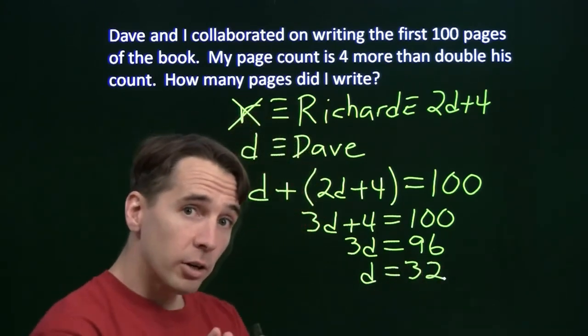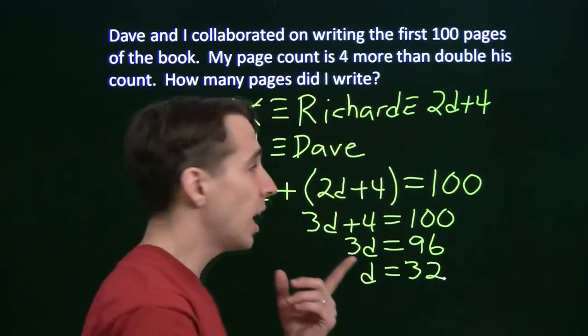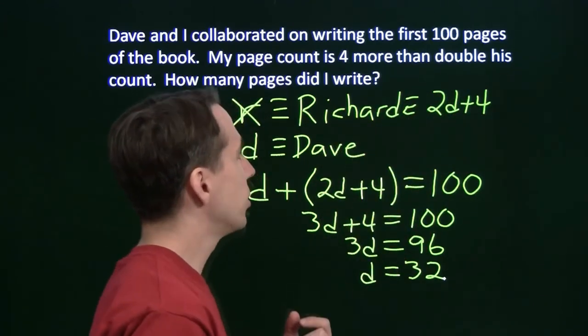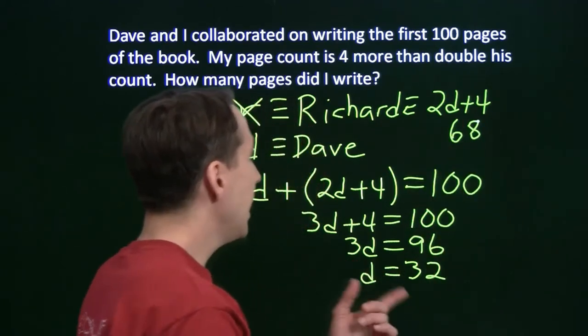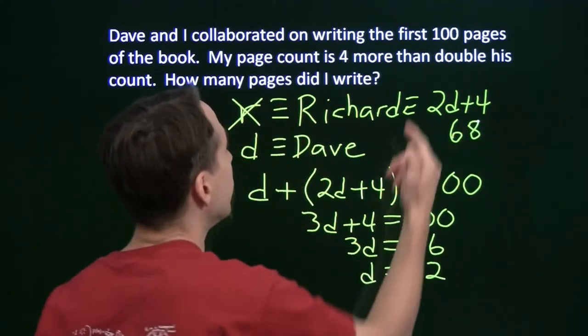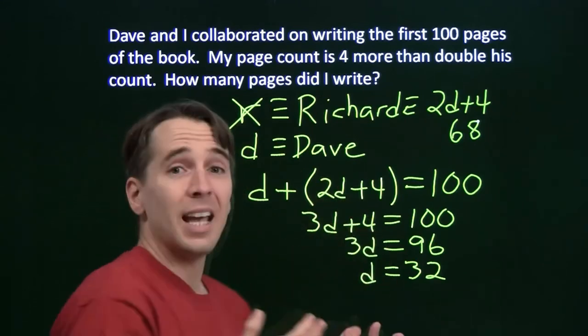Now, of course, we have to check our answer here. I'm going to take this 32. I'm going to figure out how many pages I wrote. So you've got 2 times 32 is 64, plus 4, that's 68, and 68 plus 32 is 100, so it checks out. And we're done.